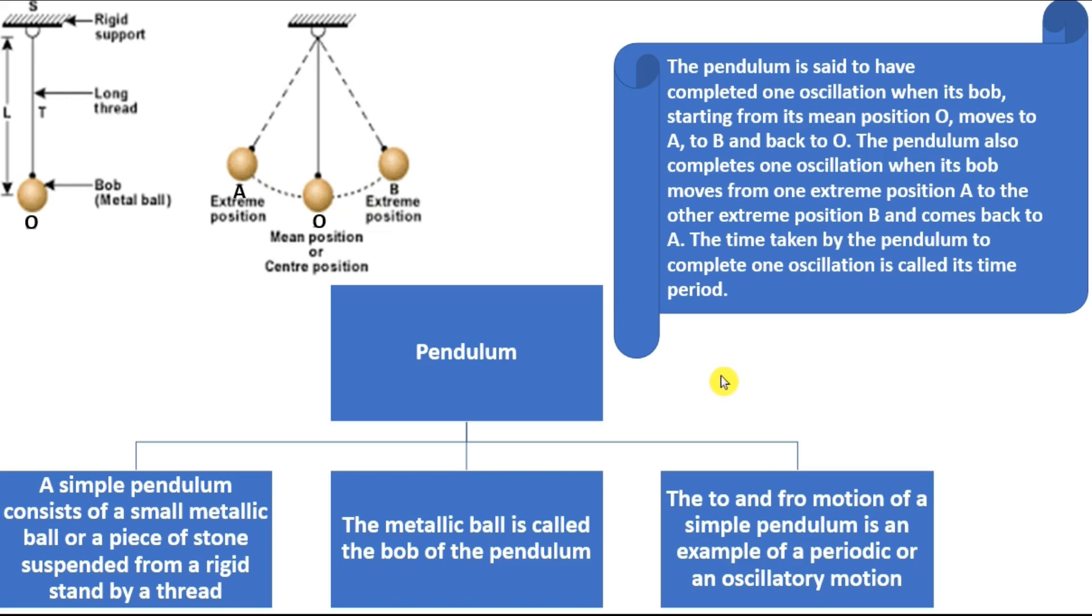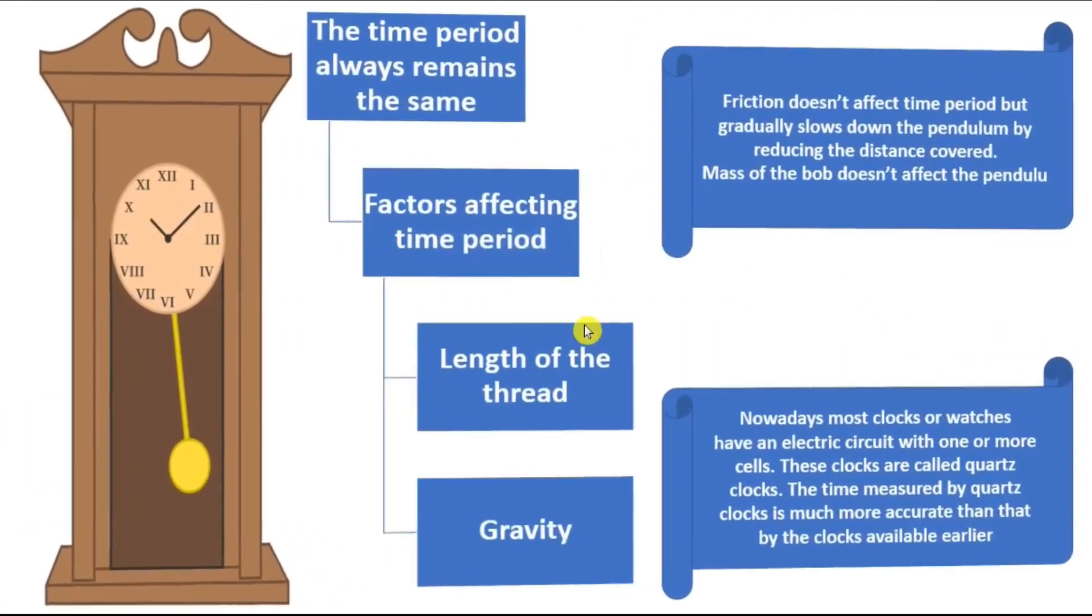This time period of the pendulum will always remain the same, unless you change the length of the thread. If you push a pendulum, it will move slowly, slowly. The distance will go on decreasing until it stops. Even till the last moment, the time if you measure it will be the same, because not only does the distance decrease, the speed of the pendulum also decreases. Both of them are proportionate.